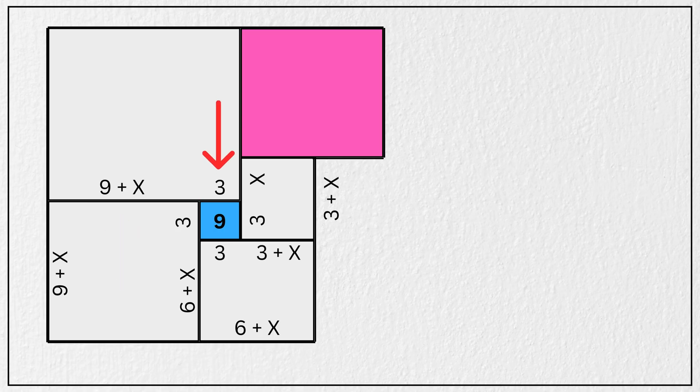Now if this length is 3 units and this length is 9 plus x units, that means the total length of this square will be 3 plus 9 plus x units, which is 12 plus x units. So this is 12 plus x units and this is also 12 plus x units.